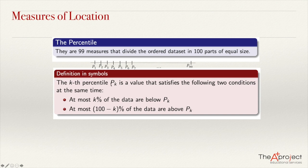Pk — where k indicates the kth percentile — is defined as follows. For example, if k equals 7, then 7% of the data are below P7. So, at most k percent of the data are below Pk, and at most 100 minus k percent of the data are above Pk. That's the definition of the kth percentile.